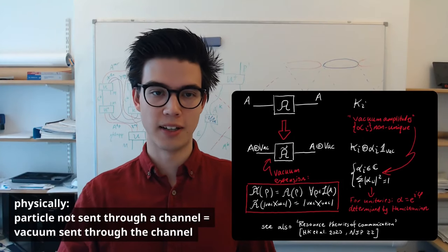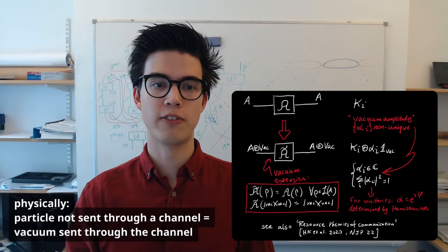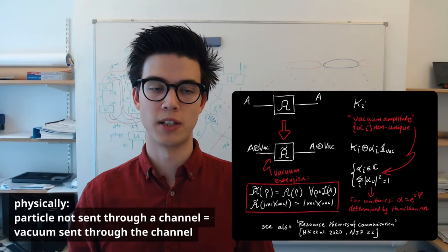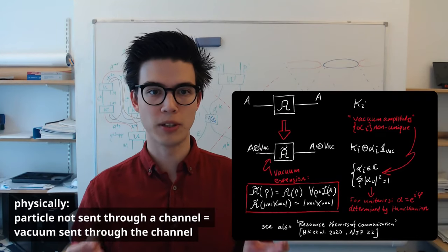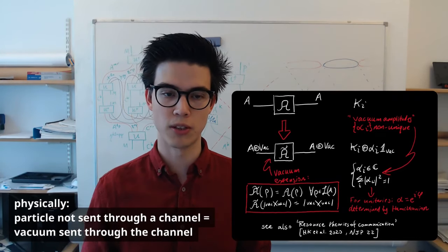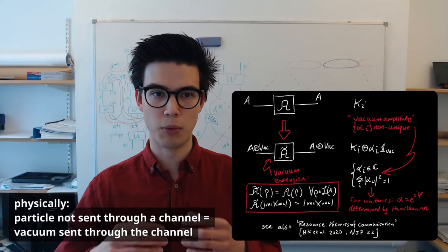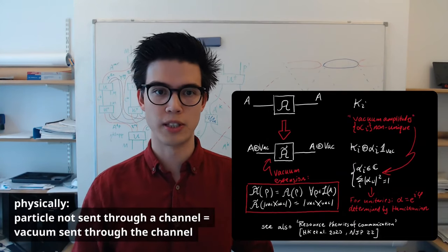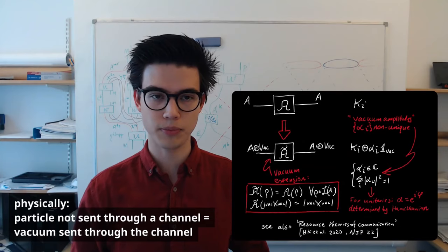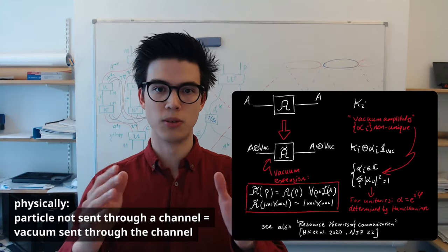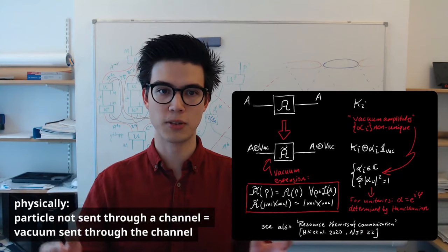To construct a superposition of two quantum channels, we need to specify some additional information beyond knowing the two channels themselves. There are various ways to do this — for example, considering the Stinespring dilation of the individual channels. In this talk, we take an operational approach considering what we call the vacuum extensions of the channels, inspired by the field-theoretic description of the physical devices implementing the quantum channels. Physically, a quantum channel models the action of some physical device, for example a transmission line between Alice and Bob — say, an optical fiber transmitting single photons.